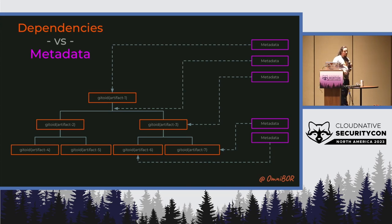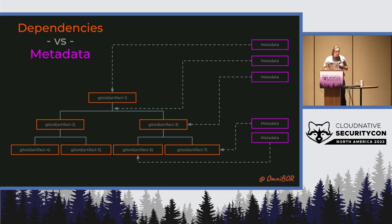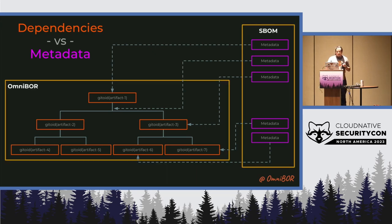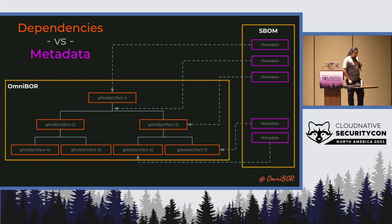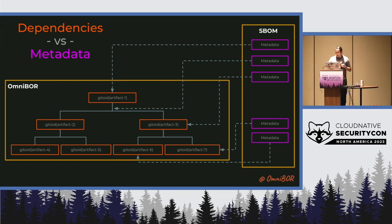The metadata can be dynamic — I run an image scanner today, I run it again six months from now, and it's probably going to change. So we want to keep this separate but use the Omnibore graph as the identifier to determine what the metadata applies to. Omnibore is on the left, the SBOM stuff is on the right. We've been working with various SBOM vendors — for example, in SPDX 2.3 they've added support for Gitoids, which gives the ability to reference the Omnibore graph. That was direct collaboration we had with them.